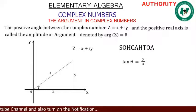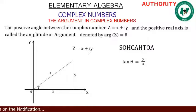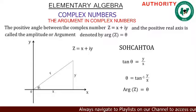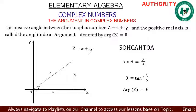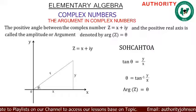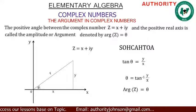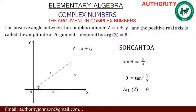We are looking for θ specifically. So dividing both sides by tan, we get tan⁻¹(y/x), meaning θ = tan⁻¹(y/x). So the argument of a complex number is θ = tan⁻¹(y/x).